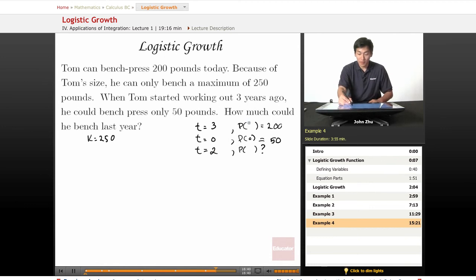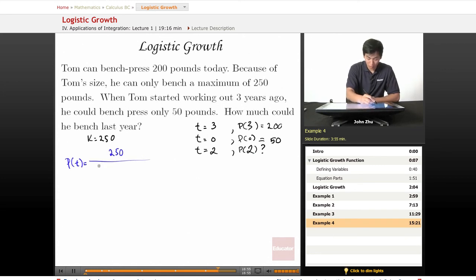So P of three equals 200. What is P of two? We go ahead and plug in our growth model. P of T equals carrying capacity, 250 pounds, over A times E to the negative KT plus 1.